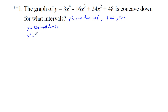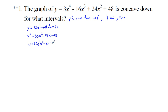y double prime equals 36x² - 96x + 48. Setting y double prime equal to zero, we factor out the GCF of 12: 12(3x² - 8x + 4) = 0. Dividing by 12 gives 0 = 3x² - 8x + 4.